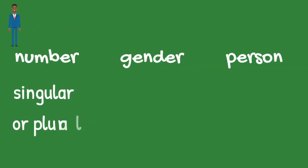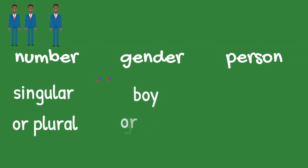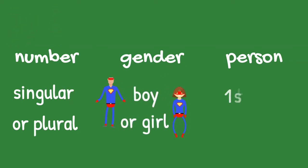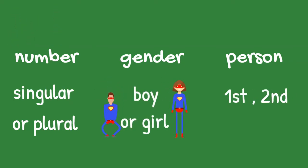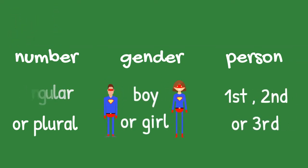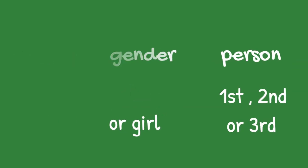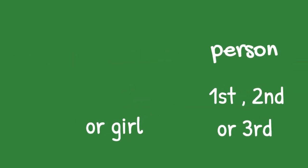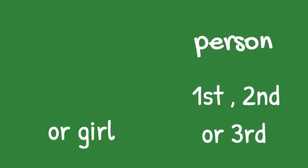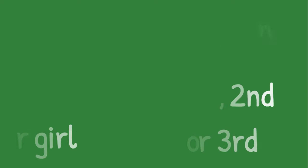So if it is singular — it's a pool, it's a day, it's a boy — it's he; it's a girl — it's she. First person is I, second person is you, third person is they.